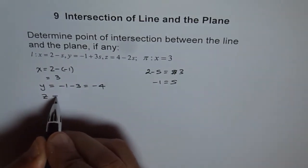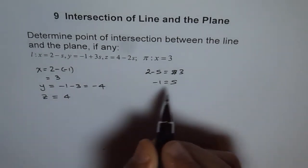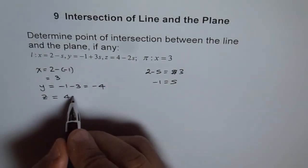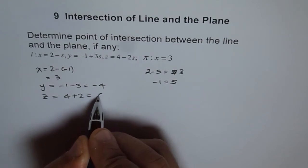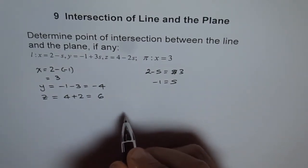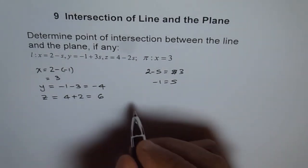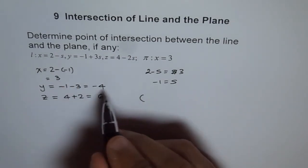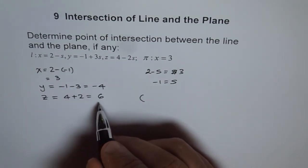And for z, we get 4. s is minus 1, so we'll change the sign, which is 6. Therefore, the point of intersection is 3, minus 4, and 6.